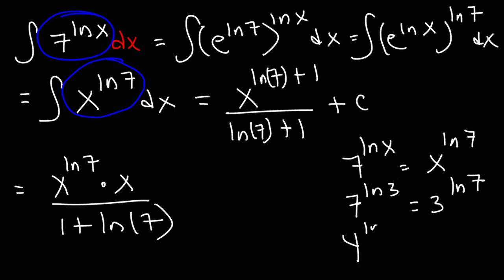Or 4 raised to the ln 5, that's going to equal 5 raised to the ln 4. It works. So what we're going to do is we're going to replace this with our original expression, 7 raised to the ln x.